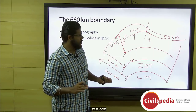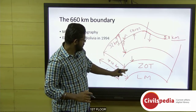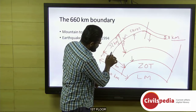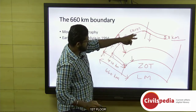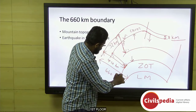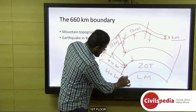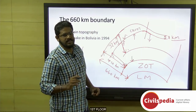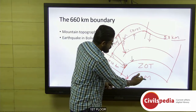From the asthenosphere until 410 kilometers from the earth's surface is the upper mantle. Below the upper mantle, from 410 kilometers to 660 kilometers from the surface, there is a zone of transition within the mantle. Below this comes the lower mantle, then the outer and inner core, and then the center of the earth.